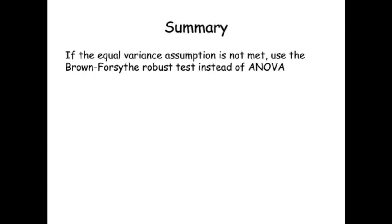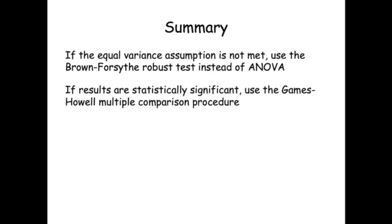When the equal variance assumption has not been met, the Brown Forsyth robust test should be used. If these results are statistically significant, the Games-Howell multiple comparison procedure is used to determine specific mean differences.